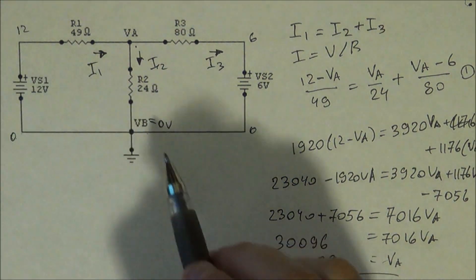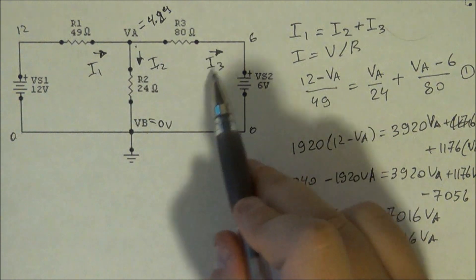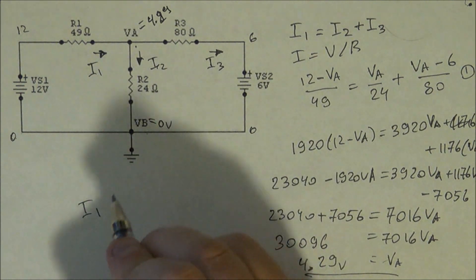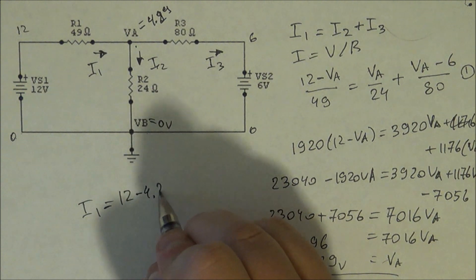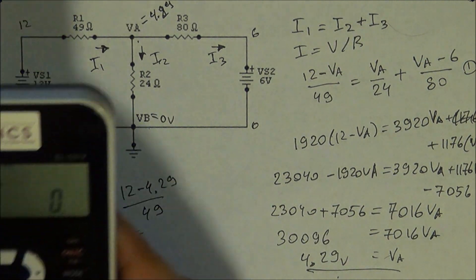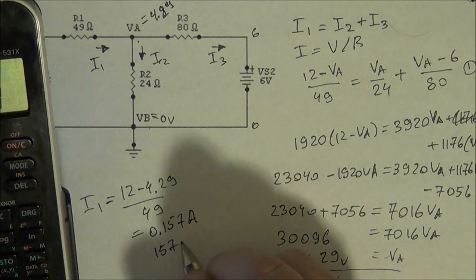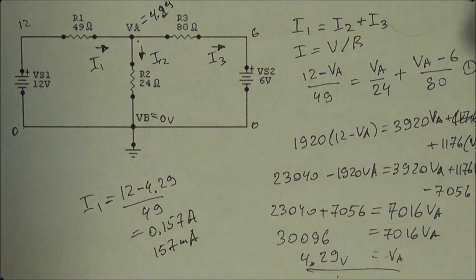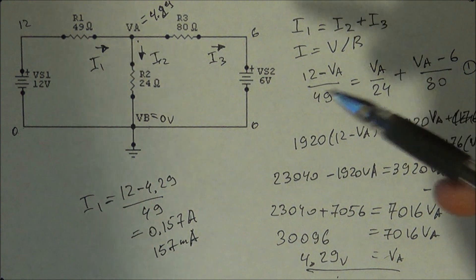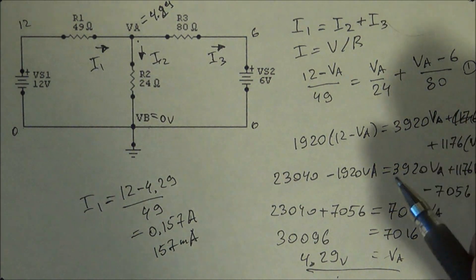From this information, as I explained in my earlier video, you know that VA is equal to 4.29 volts, so you should be able to get all these currents — just plug it back in. For example, I1: you're going to do 12 minus 4.29 divided by 49, and you should get 0.157 amps or 157 milliamps. On an exam question, you can typically be asked for a voltage, current, or resistance, and you should be able to solve for that.